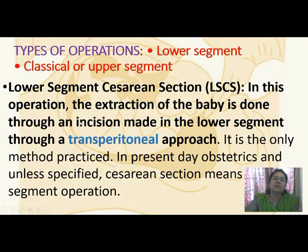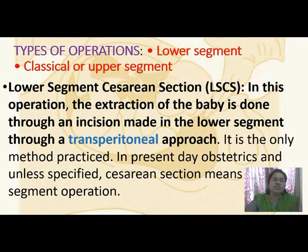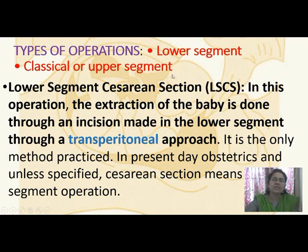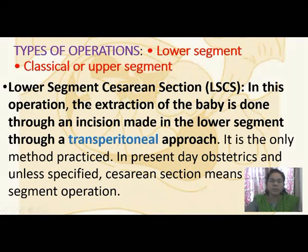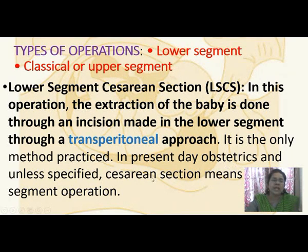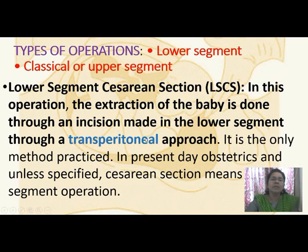According to the type of incision, caesarean section is classified as lower segment or classical (upper segment). Lower segment caesarean section: the extraction of the baby is done through an incision made in the lower segment through a transperitoneal approach. It is the only method practiced nowadays, and unless otherwise specified, caesarean section means a lower segment operation.